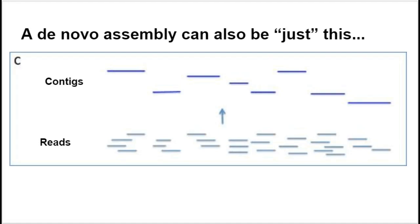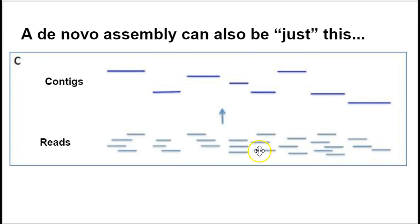De novo assembly, in our context, basically means what this picture is showing: we're going to have short reads and we are going to assemble them into contigs.